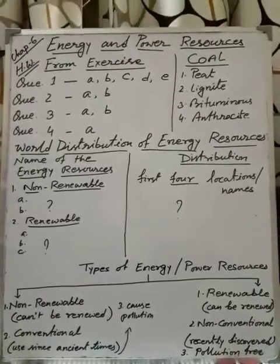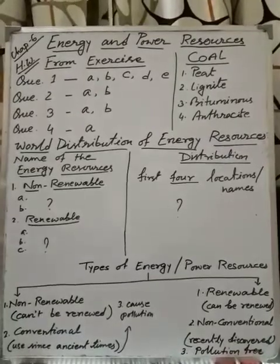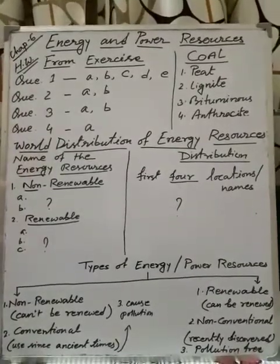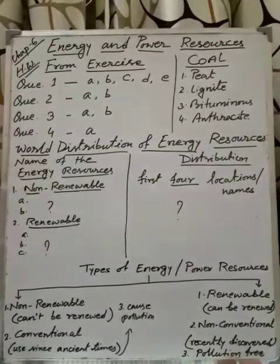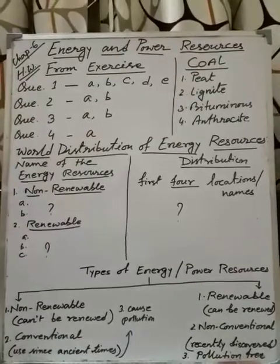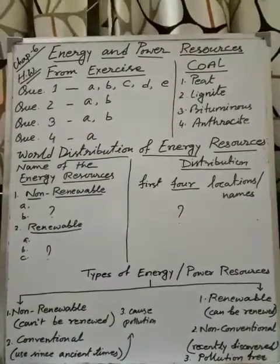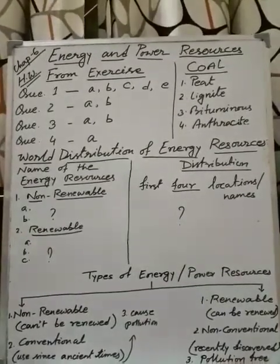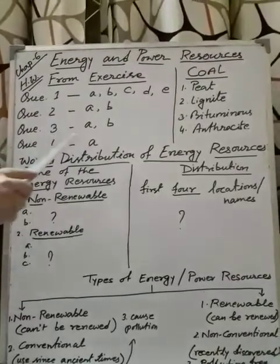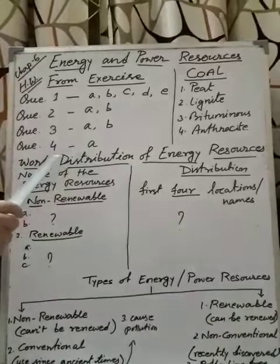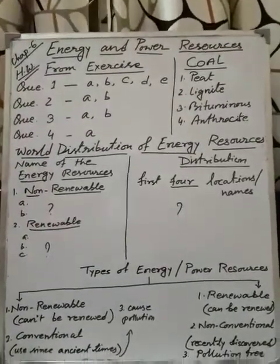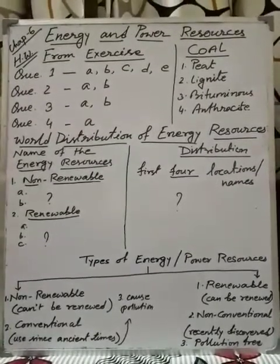First I have given you some homework. You just note it down and I want to see the answers in your copy. From the exercise I have given some questions. Question number 1, A, B, C, D, E — five terms are there that you have to define or discuss. Question number 2, you will write A and B — it is a short type question. Question 3, A and B. Question 4, only A — that is about differences. Differences between conventional and non-conventional resources. This is your homework.